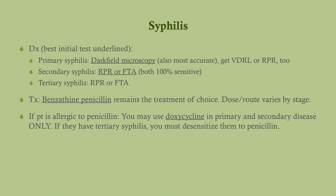The dose and route varies by stage; on the USMLE, you won't be expected to know the dose, but you will be expected to know the route. If you're dealing with tertiary syphilis, you need to give IV penicillin. Even if the patient is allergic, you still have to give penicillin — we desensitize the patient. For primary or secondary syphilis, you can use doxycycline if the patient is allergic. In tertiary syphilis, only penicillin; if allergic, we go through the arduous process of desensitizing them.